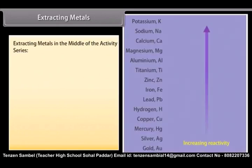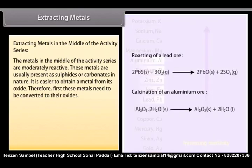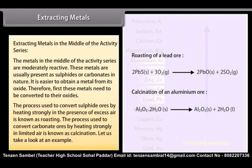Extracting metals in the middle of the activity series. The metals in the middle of the activity series are moderately reactive. These metals are usually present as sulphides or carbonates in nature. It is easier to obtain a metal from its oxide. Therefore, first these metals need to be converted to their oxides. The process used to convert sulphide ores by heating strongly in the presence of excess air is known as roasting. The process used to convert carbonate ores by heating strongly in limited air is known as calcination.